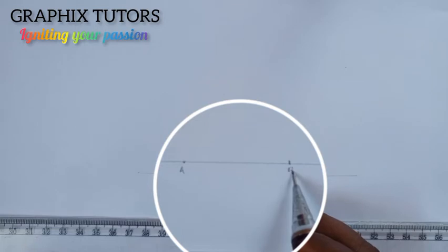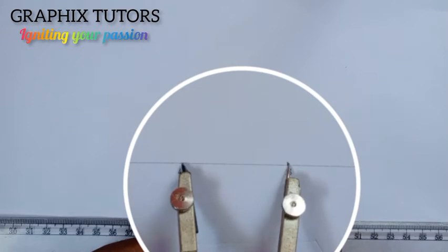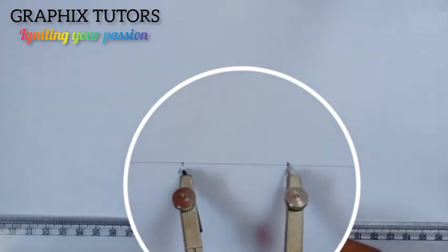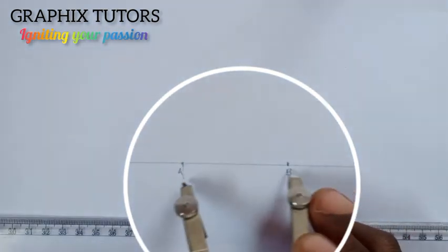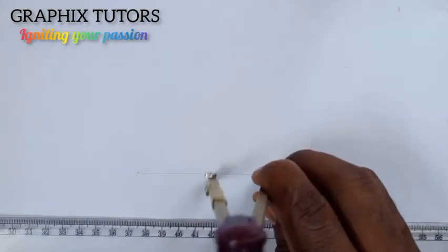Now I'm going to take my compass and I'm going to gauge it between A and B as my radius. You can see that. Then I'm going to draw a circle. I'll draw a circle this way.